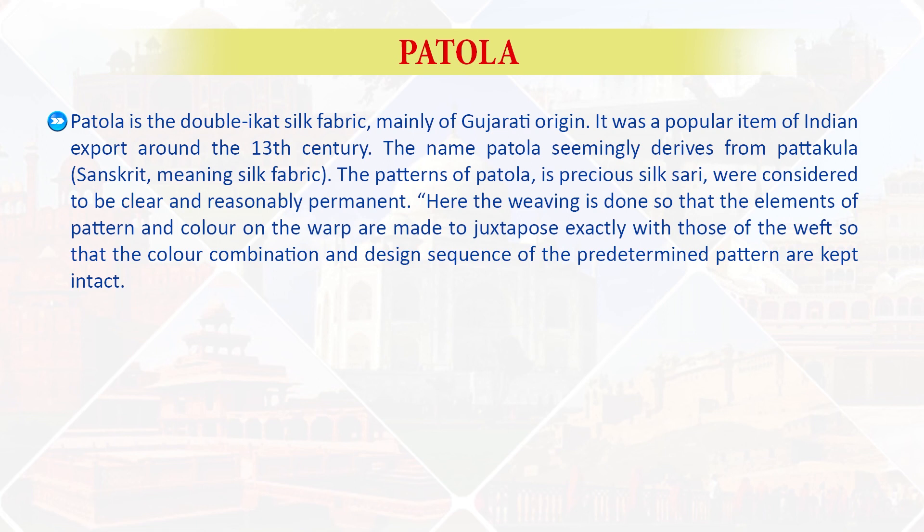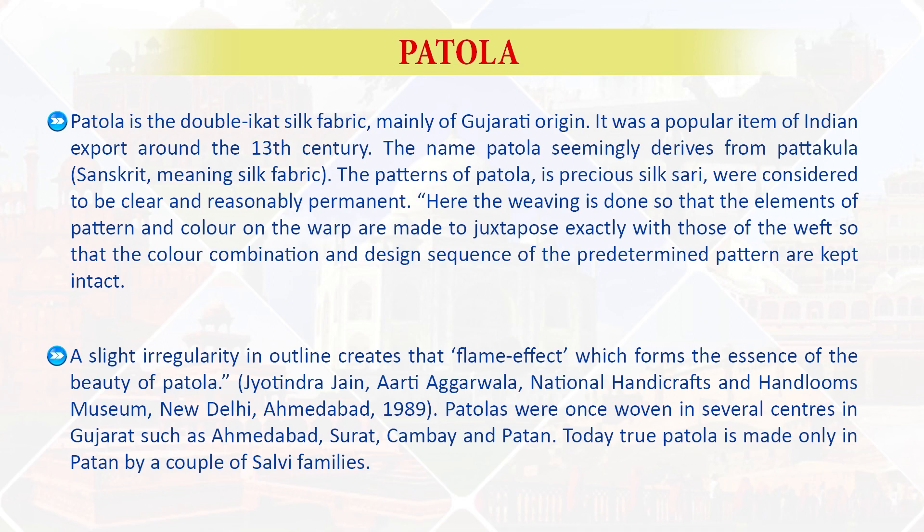A slight irregularity in outline creates the flame effect which forms the essence of the beauty of Patola. Some of the prominent textile forms in existence in India are Patola, Kantha, Jamdani and Bandej. Learners, let us sum up for this session. Heritage is not only manifested through tangible forms such as artifacts, buildings or landscapes but also through intangible forms. Intangible heritage includes voices, values, traditions and oral history.